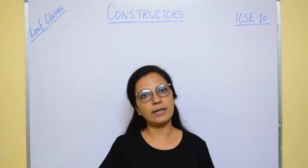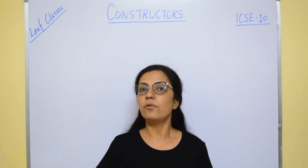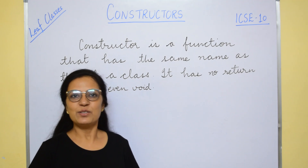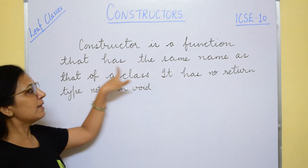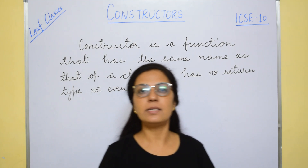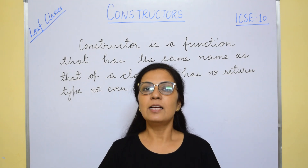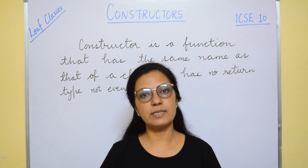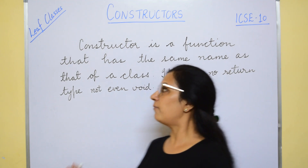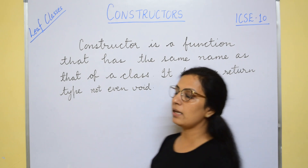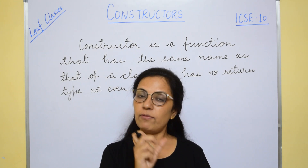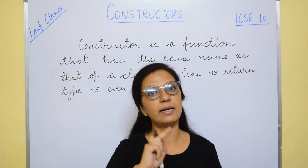The name of the constructor is the same as the class name — we cannot change the name of the constructor. By definition, a constructor is a function that has the same name as that of a class and it does not have any return value, not even void. When we take any user defined function, we always give a return type. If the function is not returning any value, we write void. But a constructor does not return any value, not even void.